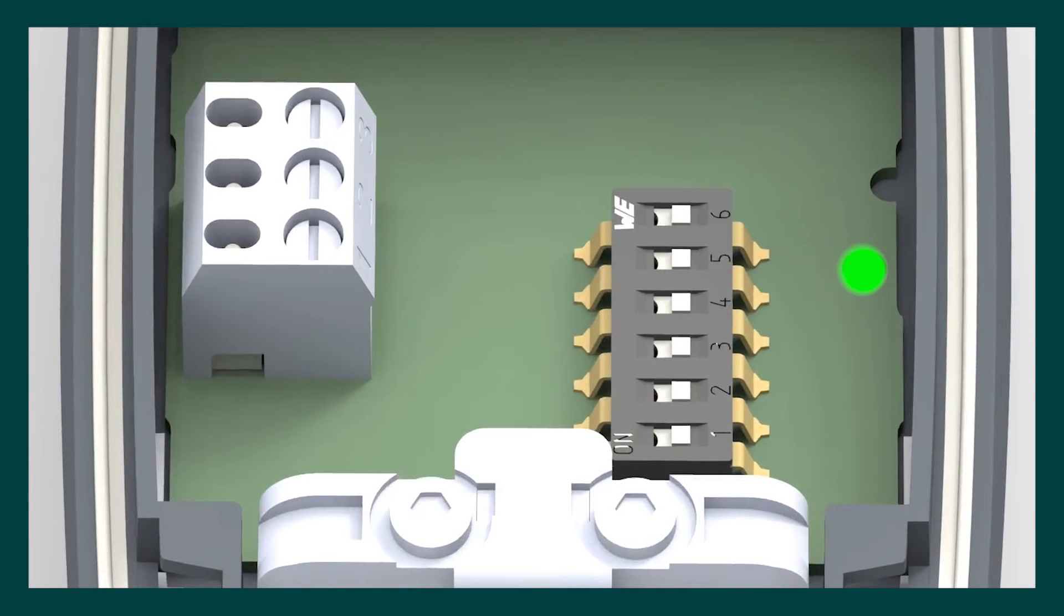To drive the actuator fully open, flip Dipswitch 6 from the off position to the on position, then back to the off position.